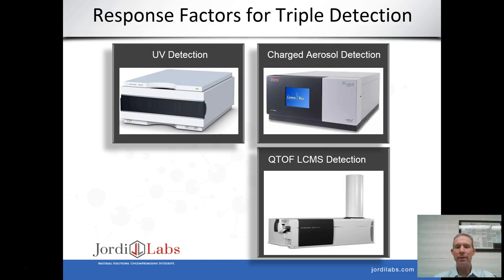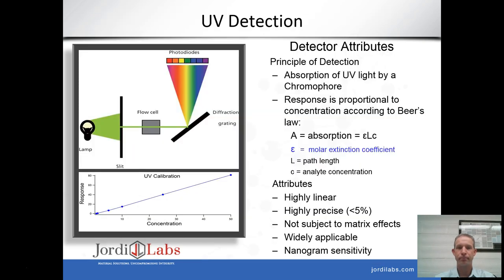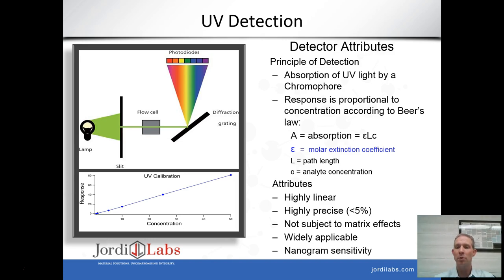I'll now turn my attention to some work we did using a triple detection system consisting of a UV detector, a charged aerosol detector, and a QTOF LC-MS detector, all in series. The UV detector's response is based on the principle of light absorption: if a molecule has a chromophore, it will absorb light and the response is proportional to concentration according to Beer's law, giving a specific response factor through the molar extinction coefficient and path length.